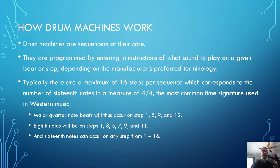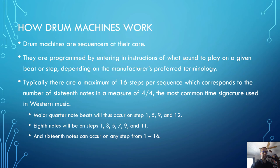But none of that answers the question: how do drum machines work? At their core, drum machines are sequencers. They are programmed by entering instructions of what sound to play on a given beat within the measure — or step, depending on the manufacturer's terminology. Generally speaking, there are a maximum of 16 steps per sequence, which corresponds to the number of 16th notes in a measure of 4/4, the most common time signature used in Western music.